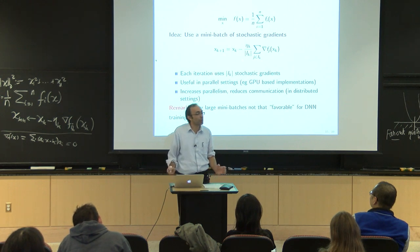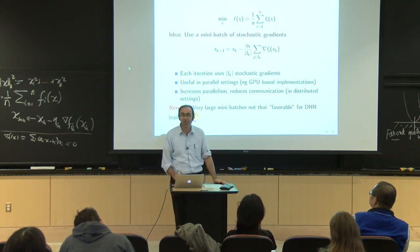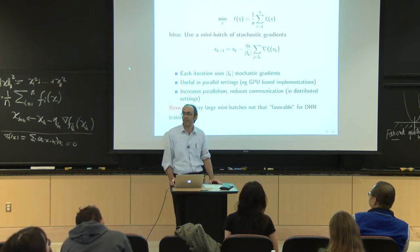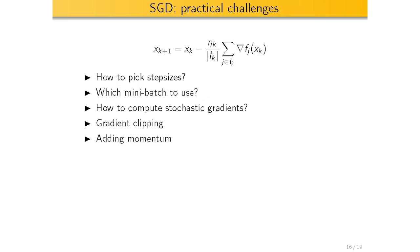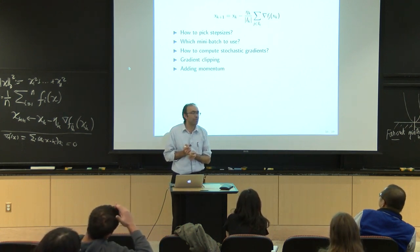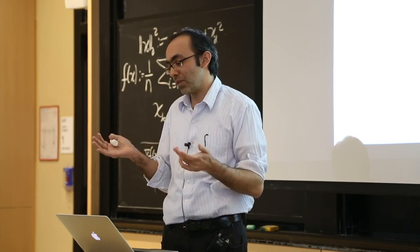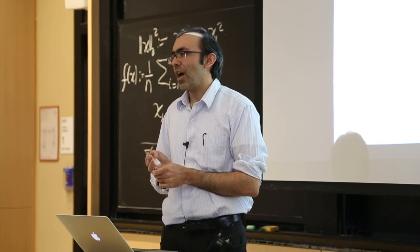Here are practical challenges. People have various heuristics for solving these. Even though SGD is simple, it doesn't mean it's trivial. The moving parts in SGD are the stochastic gradients, the step size, the mini-batch. How should I pick step sizes? Very non-trivial problem. Which mini-batch to use? With replacement, without replacement? How large should it be? Not easy questions to answer.